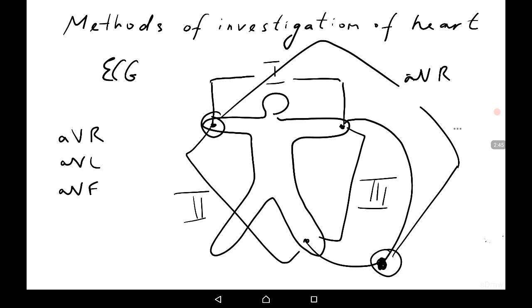For AVF, the foot electrode is taken, and for AVL, the left arm electrode is taken as the different electrode while two opposite electrodes are connected and serve as the reference point. There are also chest leads, or Wilson leads, called V1, V2, V3 through V6. These electrodes are laid on the chest in such a manner that they reflect the excitation on the front wall of the heart.